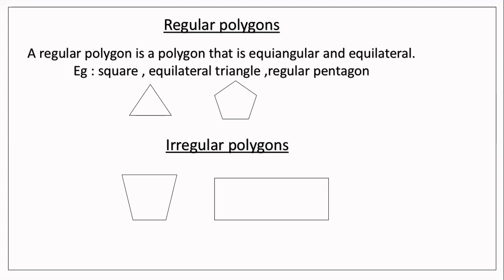In irregular polygons — just the opposite of regular polygons — sides are not equal in length and angles are not equal either. For example, this quadrilateral is an irregular polygon. A rectangle has angles equal in measure but opposite sides are equal, not all sides — so a rectangle is equiangular only, not equilateral, making it irregular.